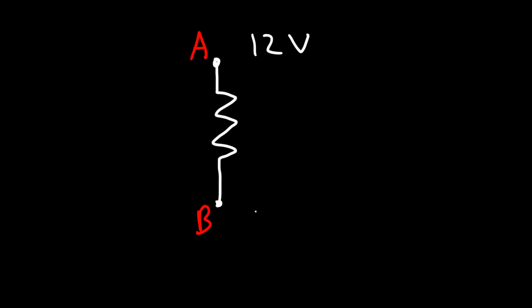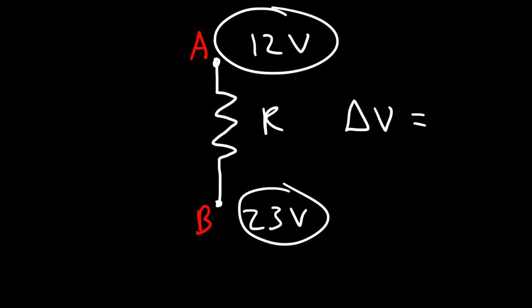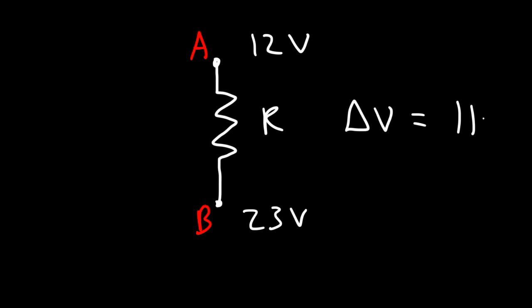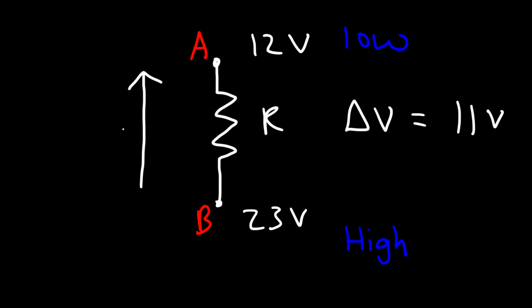Now let's say we have another resistor with points A and B. The electric potential at point A is 12 volts and at point B is 23 volts. What is the voltage across the resistor and what is the direction of current? The voltage is simply 23 minus 12, which gives 11 volts. For the direction: B is at a higher potential and A is at a lower potential, so the current flows from B to A.